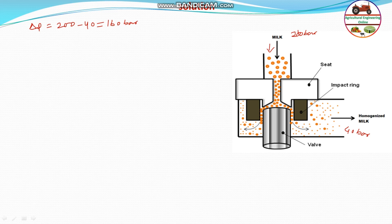Converting 160 bar to Newton per meter squared: 160 bar equals 160 into 10 to the power 5 Pascal, which is the same as 160 into 10 to the power 5 Newton per meter squared.